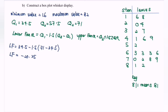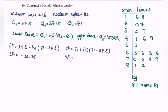Next, find the upper fence, where the upper fence equals Q3 plus 1.5 multiplied by the interquartile range, where IQR = 71 − 34.5. The upper fence equals 125.75.